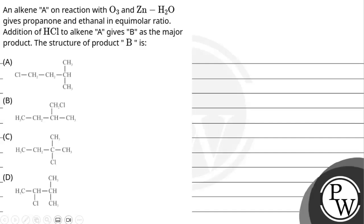Hello everyone. Let's read the question. The question says an alkene A on reaction with O3 and Zn/H2O gives propanone and ethanol in equimolar ratio.